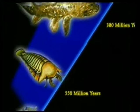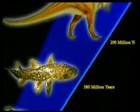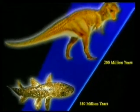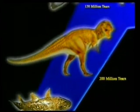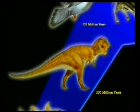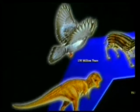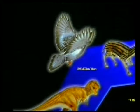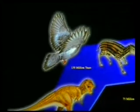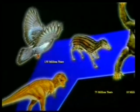It was Darwin who originally named these hypothetical imaginary creatures intermediate forms. He knew that if his theory was to be verified, then the remains of these intermediate forms would have to be unearthed in the fossil record.